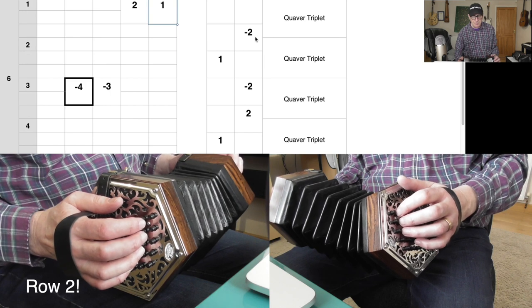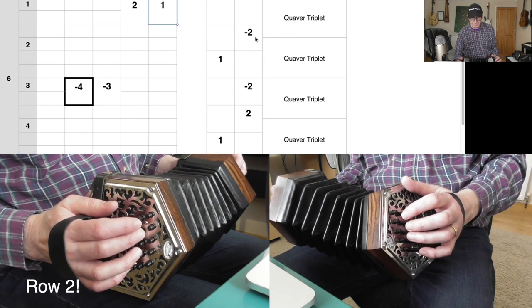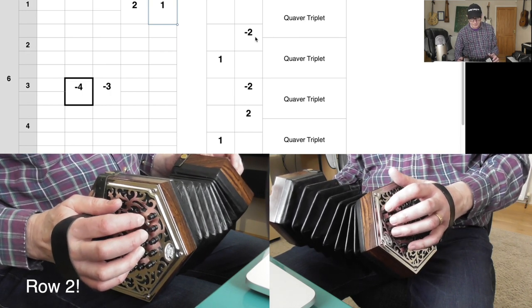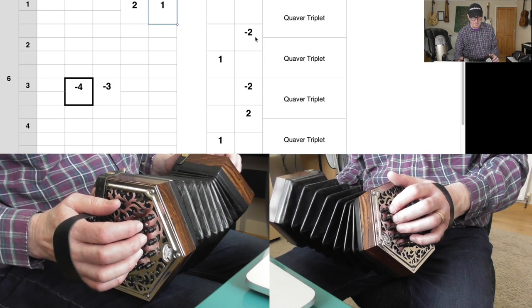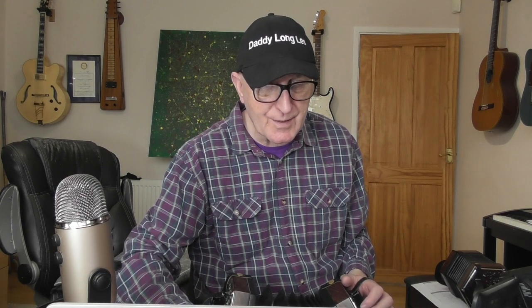Okay, so button seven, button six, button seven, button six. So let's play bars five and six. Here we go.